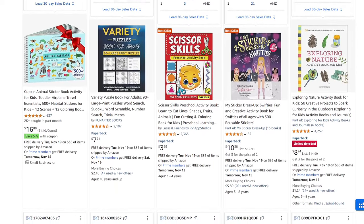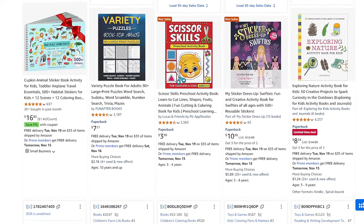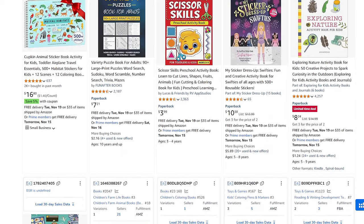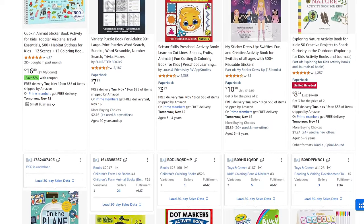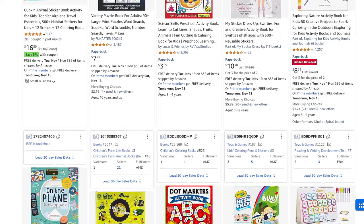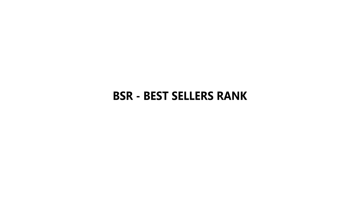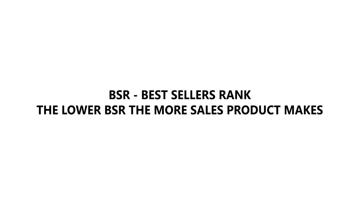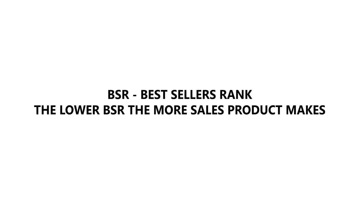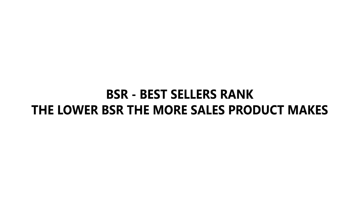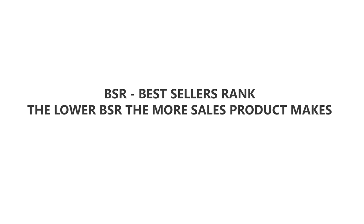Before continuing with niche research, you need to install a browser extension that will allow you to see the BSR of products. BSR stands for Best Sellers Rank and is the number Amazon uses to determine how well a product is selling. The lower the BSR, the more consistent sales a product is making.